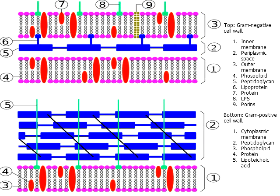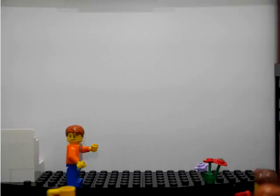Beyond the cell membrane and cell wall complex, there is one more additional layer surrounding bacteria — the capsule. This acts as an additional protective coat around the cell wall and is usually a mucoid polysaccharide layer that helps bacteria resist phagocytosis, makes the bacteria sticky to help it adhere to tissues, and helps it form biofilms.